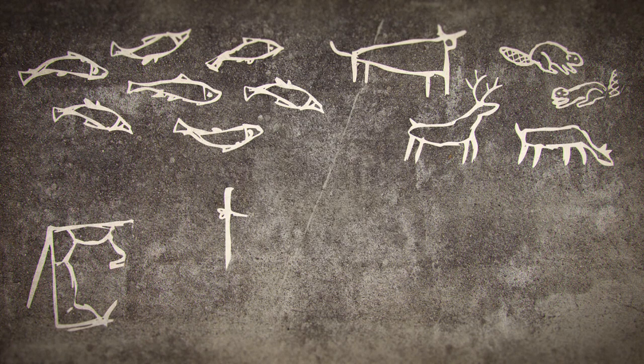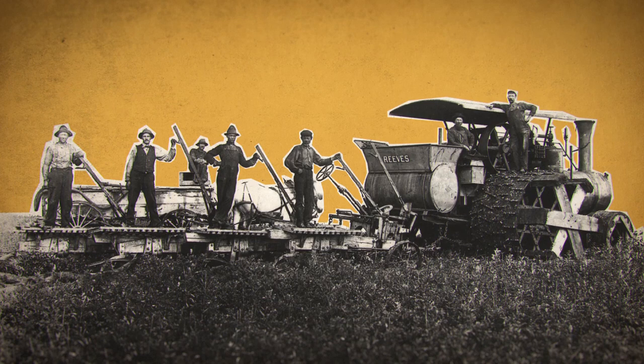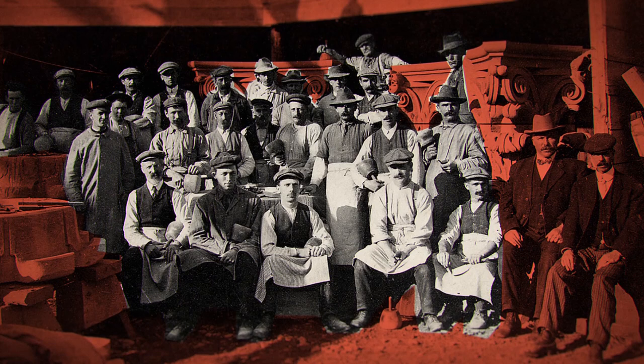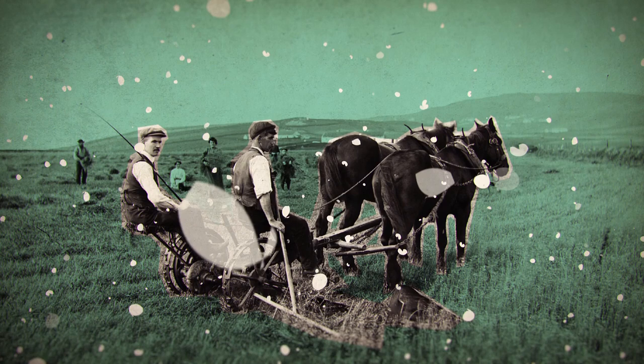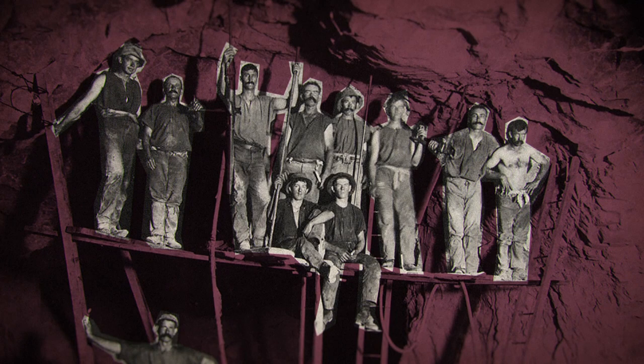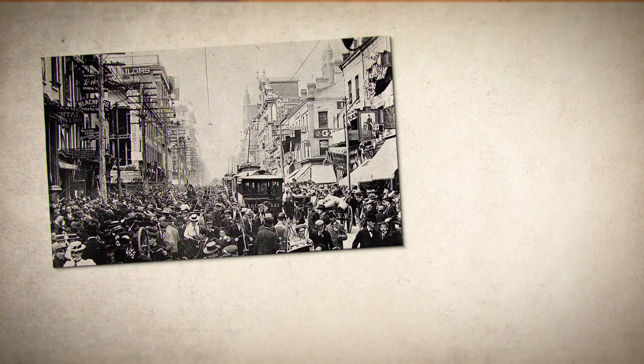Work in early Canada was dangerous and difficult. Some of the workers were indentured servants from Europe, and both African and Indigenous slaves. By the 1800s, many Canadians supported themselves as independent farmers, fishers, or craft workers. Entire families contributed to produce and sell goods. Wage earning was most often seasonal, and few wage work opportunities lasted year-round. Yet a growing number of wage workers were required to extract resources and construct the canals and railways needed to transport goods.